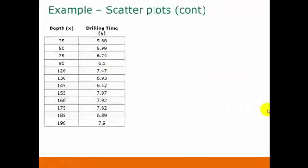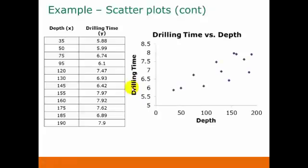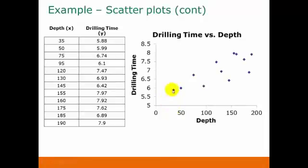Here's our data again, and here's our scatterplot. Notice that each one of these rows in our data table becomes a point on this graph. If we look at this first one, our x is 35 and our y is 5.88. All we're doing here is plotting points, just like you would have done in an algebra class. For this point, we'd have 35 for the x and 5.88 for the y, and so on — each one of these points on the graph represents one of these rows on the table.